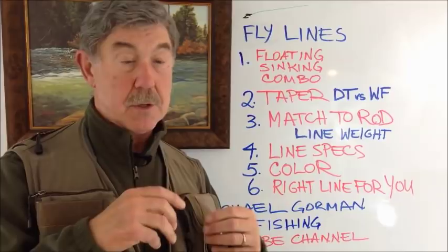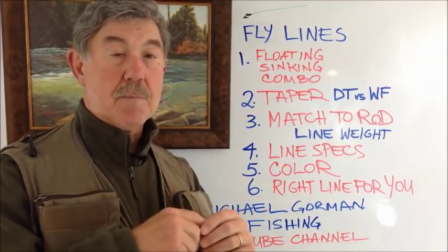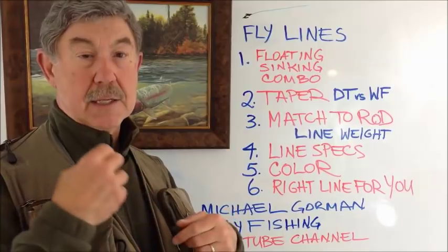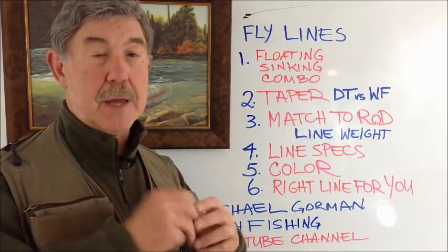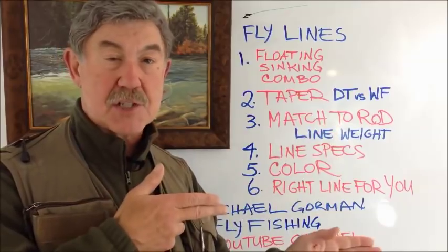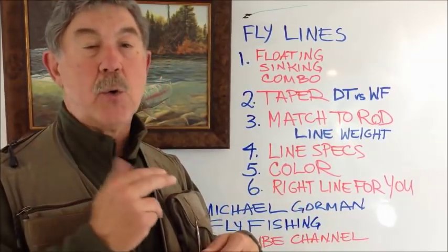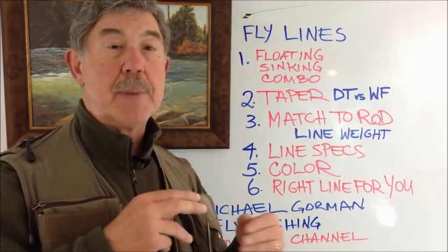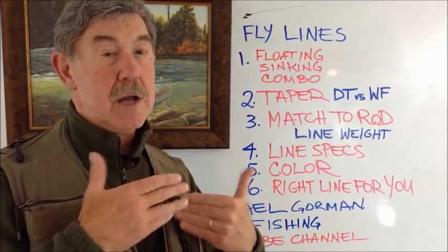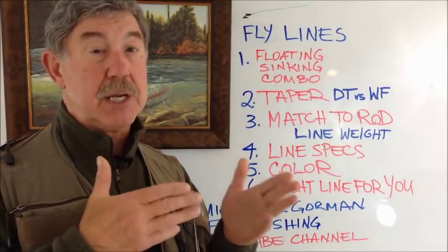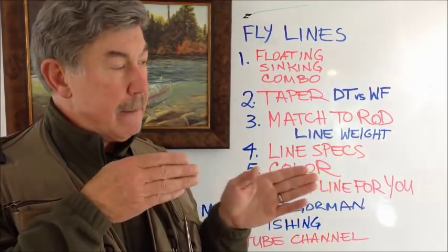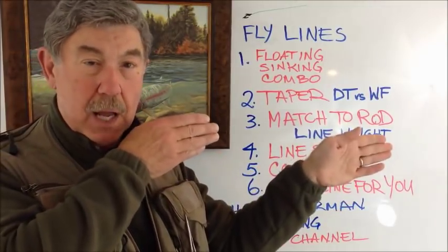Another consideration for a floating fly line is color. The question I'm asked most often by my students is: does the color of the line startle the fish? My answer is it isn't the color of the line that disturbs the fish — it's a faulty cast that splashes the line on the water, or the shadow of the line in shallow water that can alarm them. Fish looking up at the line see it against the sky, so color is hard for them to detect. The color is for you — especially in dim light conditions or when fishing small flies. If I can't locate my fly visually, I follow my fly line and it will lead me right to it.